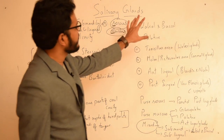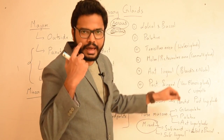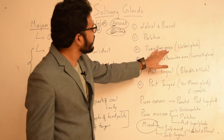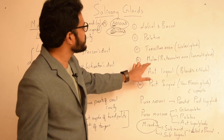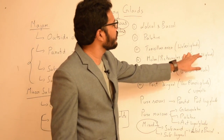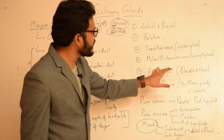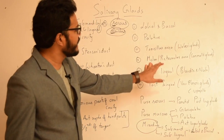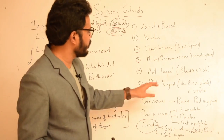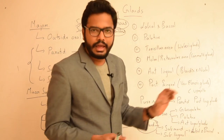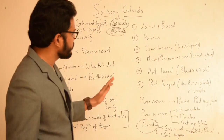The minor salivary glands present include labial and buccal glands, palatine glands, tonsillar area glands called Weber's glands, glands over the molar and retromolar area called Carmalt's glands, anterior lingual glands called glands of Blandin and Nunn, and posterior lingual glands called von Ebner's glands, which open into the circumvallate papilla.